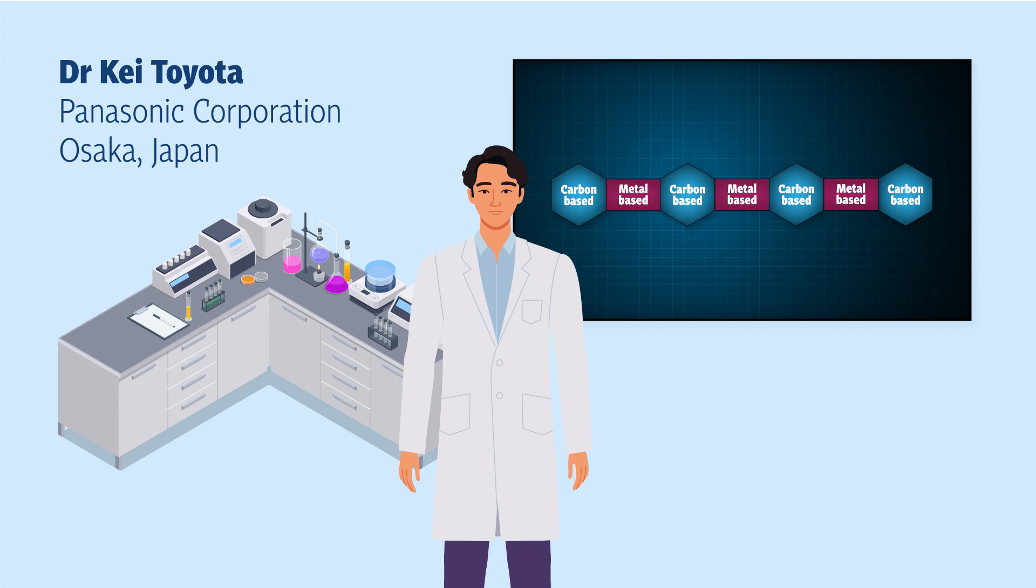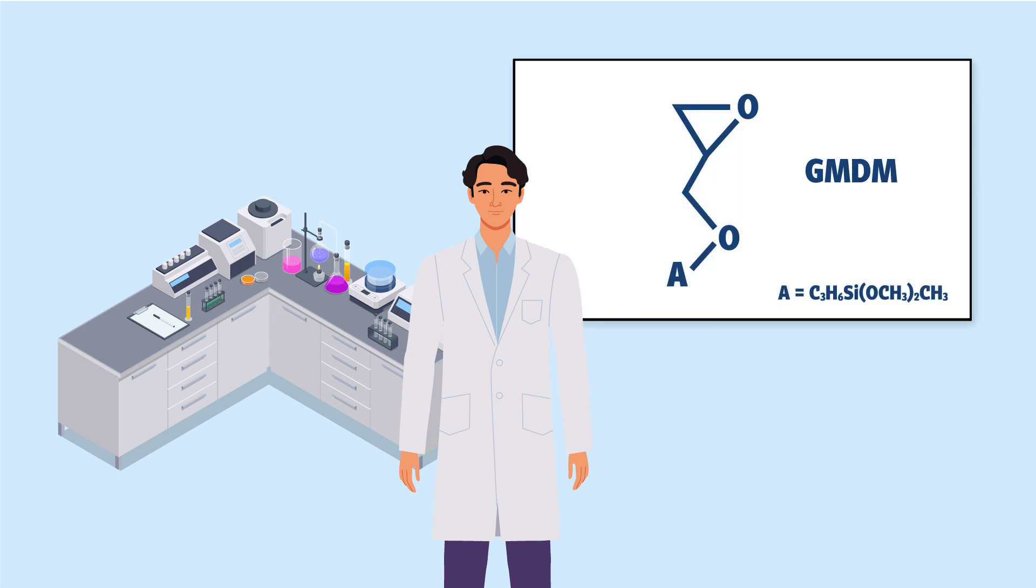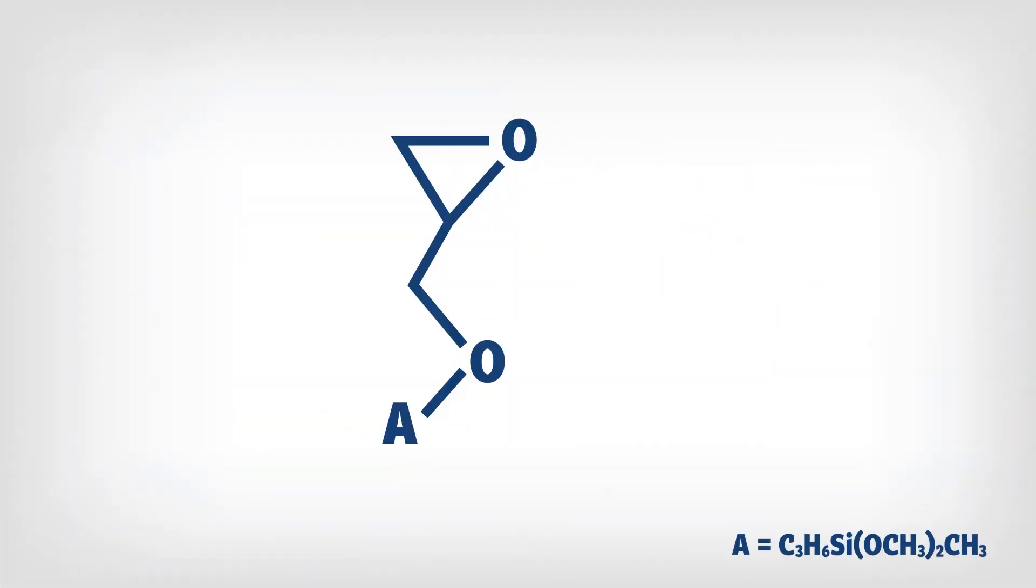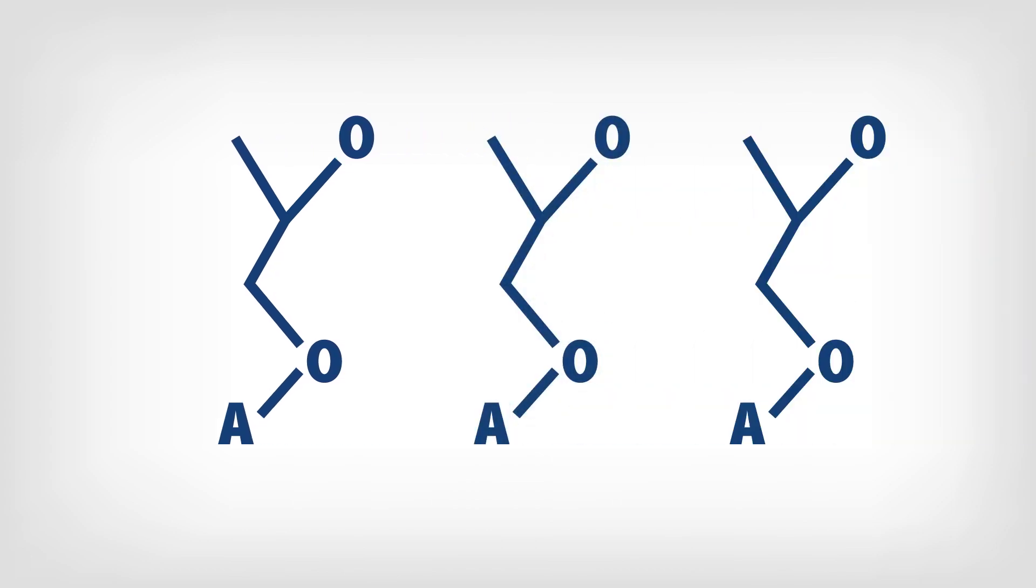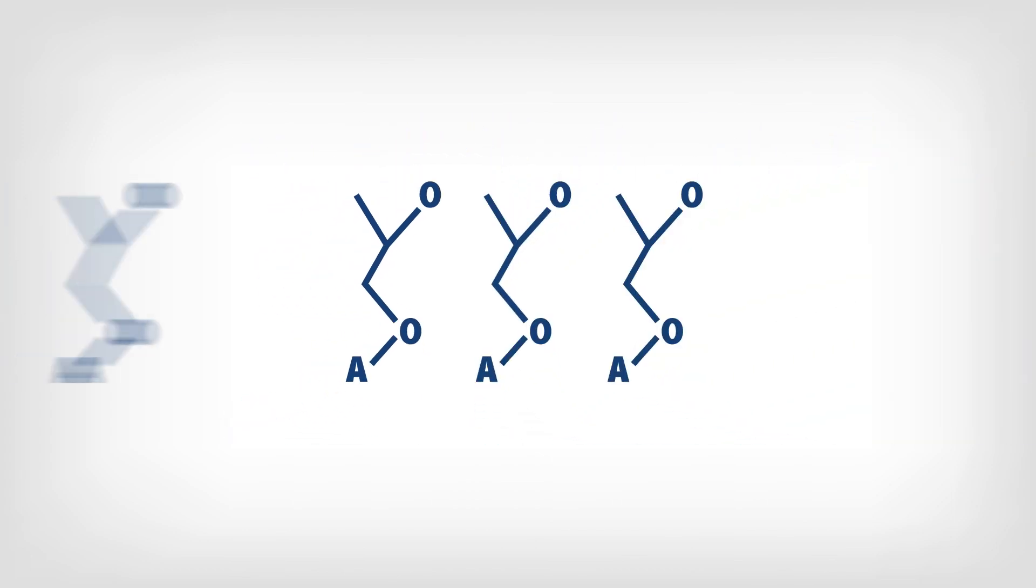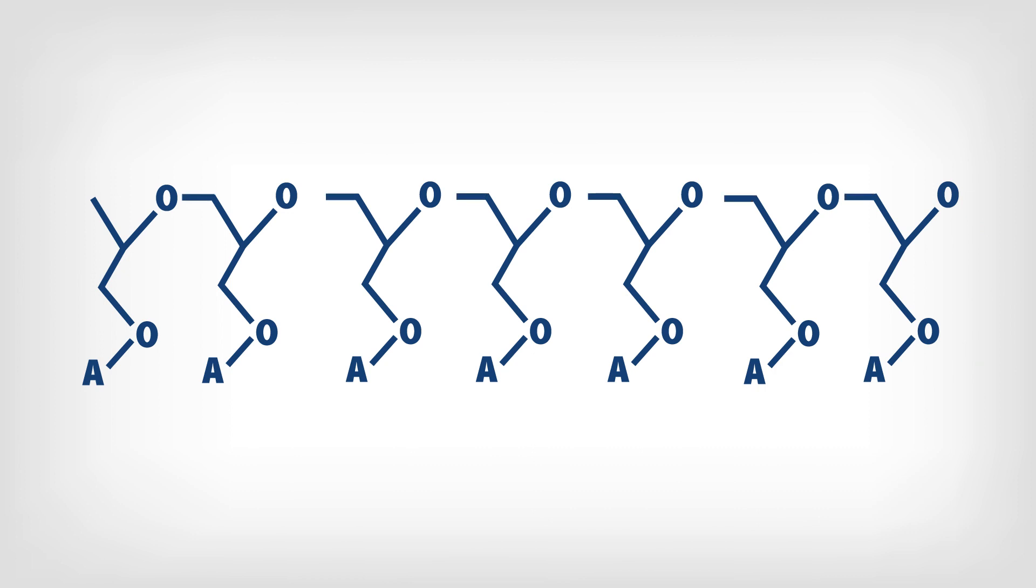He decided to focus on a compound called GMDM. This molecule has a ring of atoms at one end. Under the right conditions, the ring can be broken apart and each end will attach to another molecule. In this polymerization reaction, the molecules come together to form long polymer chains.